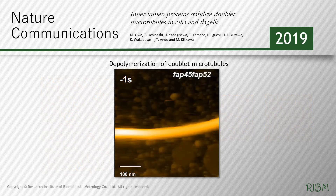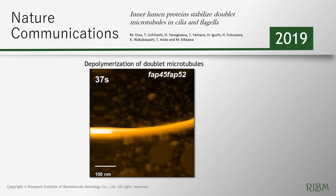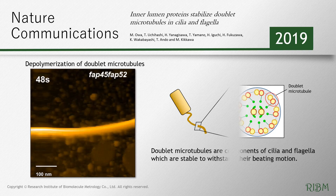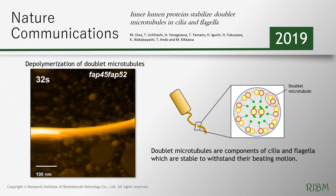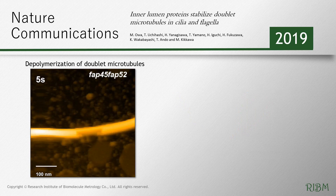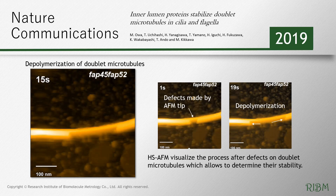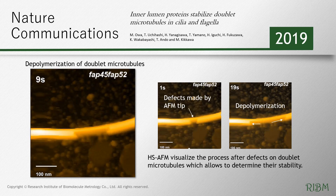The video shows the depolymerization of doublet microtubules. Doublet microtubules are components of cilia and flagella which are stable enough to withstand their beating motion. High-speed AFM visualizes the process after defects appear on doublet microtubules, allowing determination of their stability.